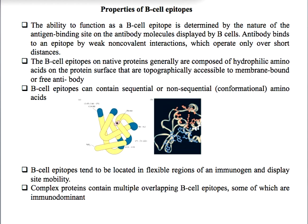Because the properties of B-cell epitopes and T-cell receptor epitopes are different, we will first discuss B-cell epitopes. In order to serve as a B-cell epitope, an epitope must be able to form weak non-covalent interactions with the immunoglobulin or B-cell receptor. B-cell epitopes on native proteins are generally composed of hydrophilic amino acids on the protein surface, because these epitopes are always exposed to the solvent.